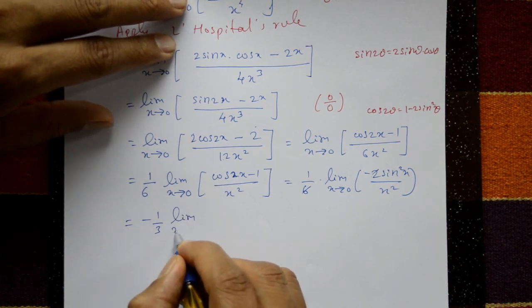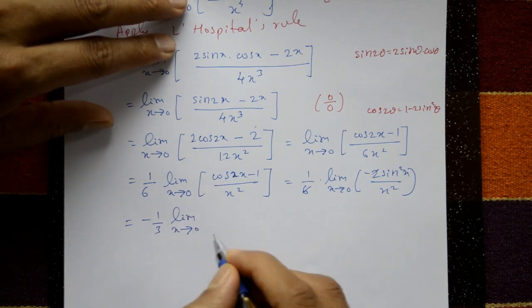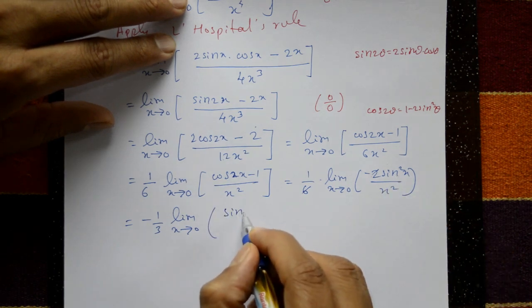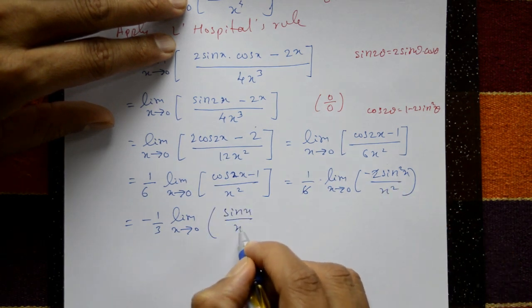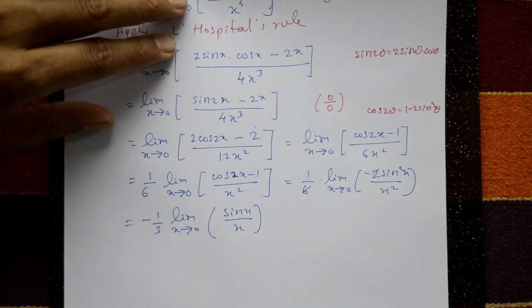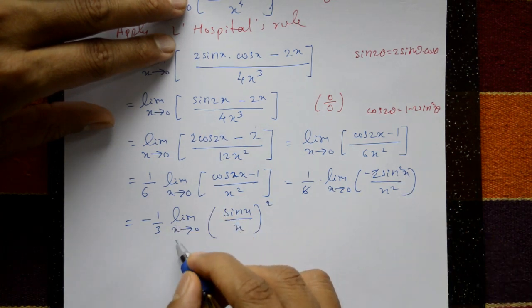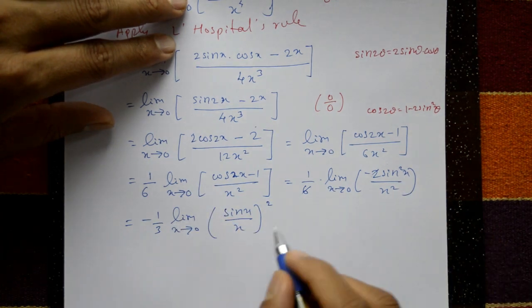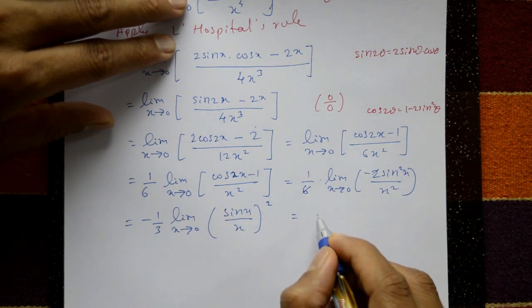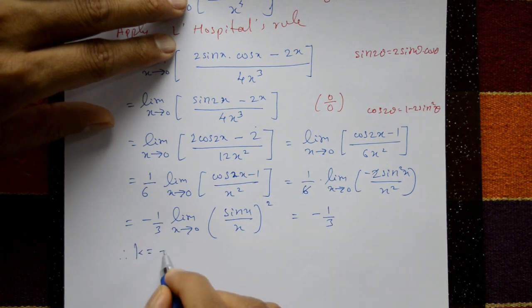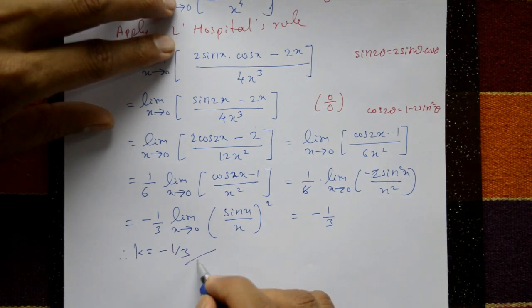Therefore: (1/6) times limit of (sin x / x)² equals 1, giving k = minus 1/3. Therefore k equals minus 1/3. This is the required solution.